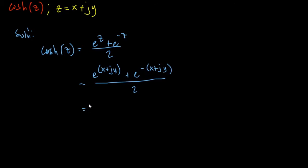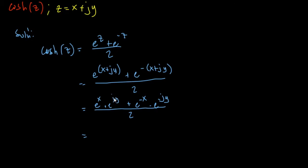Using the properties of exponential functions, we can write this as E to the X times E to the J of Y, plus E to the negative X times E to the negative J of Y, all over 2. Applying Euler's formula, E to the JY equals cosine Y plus J sine Y.